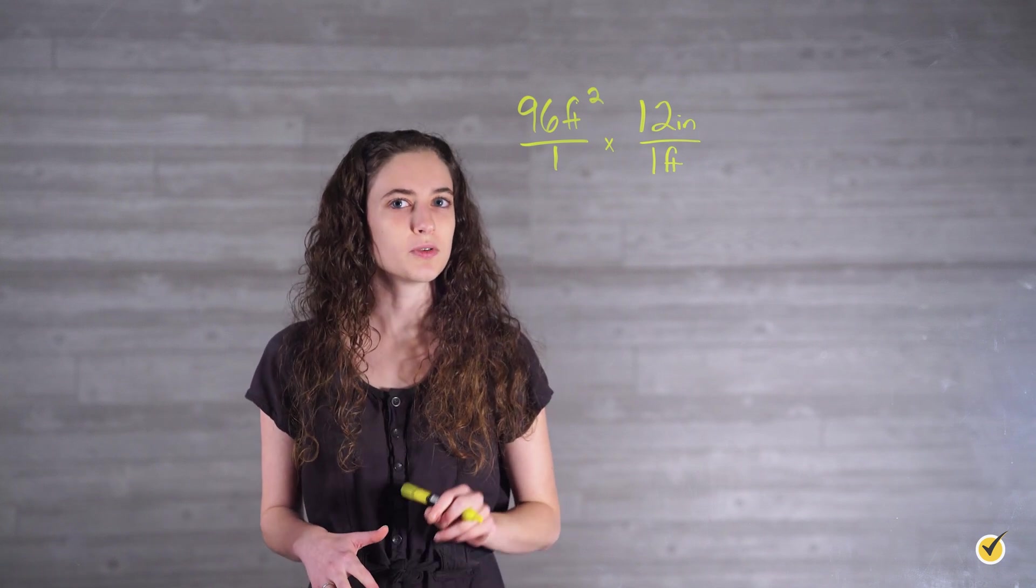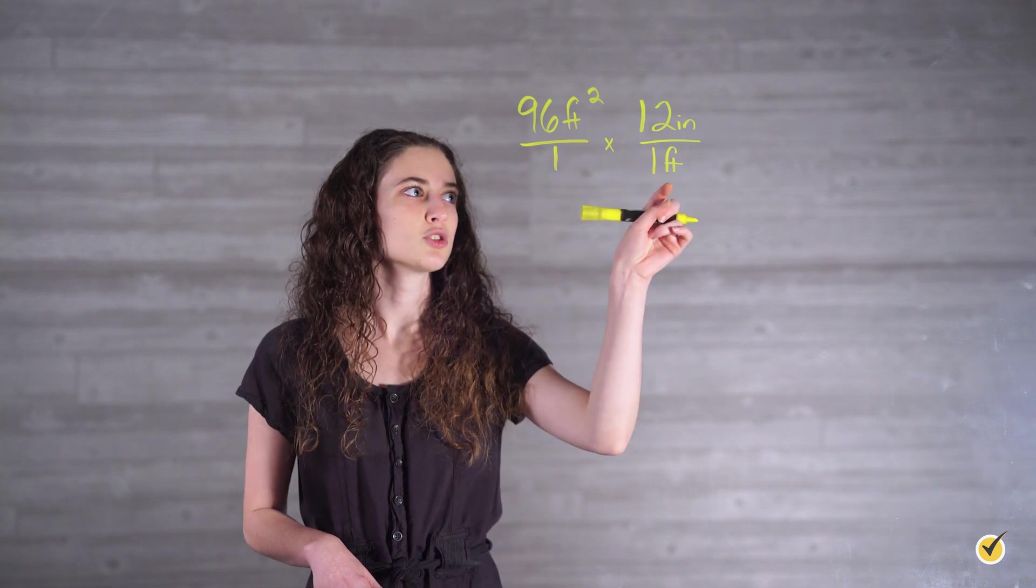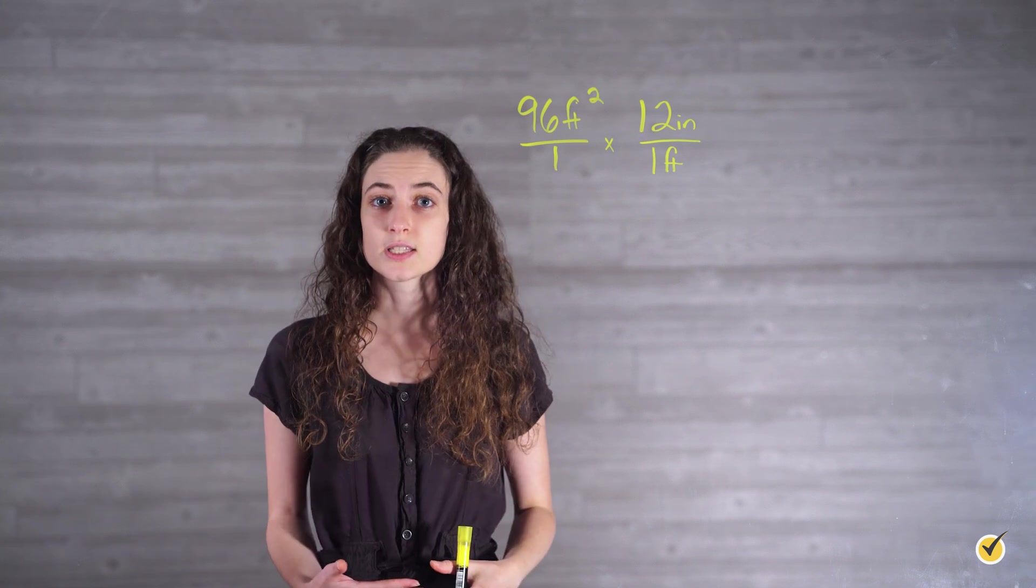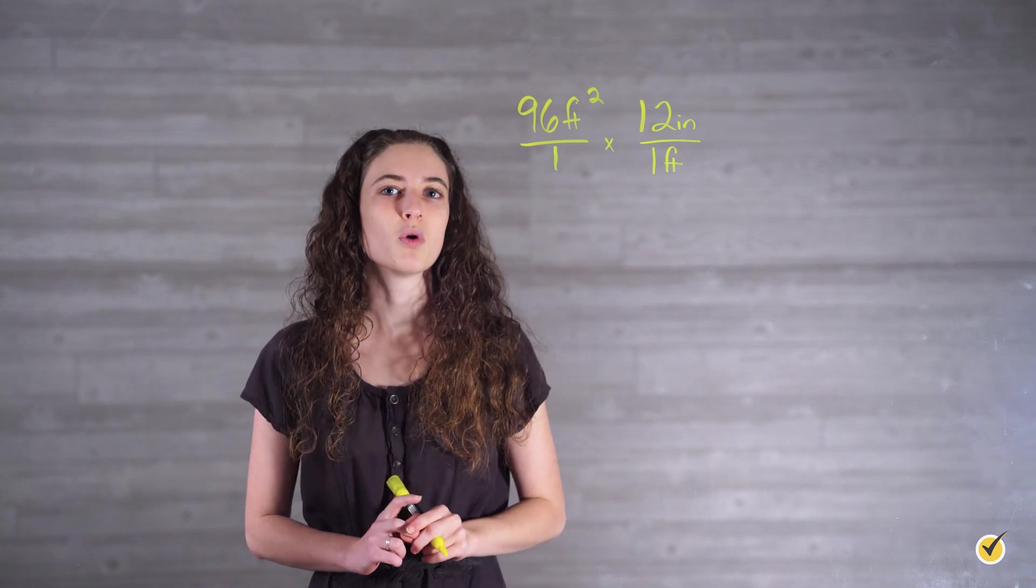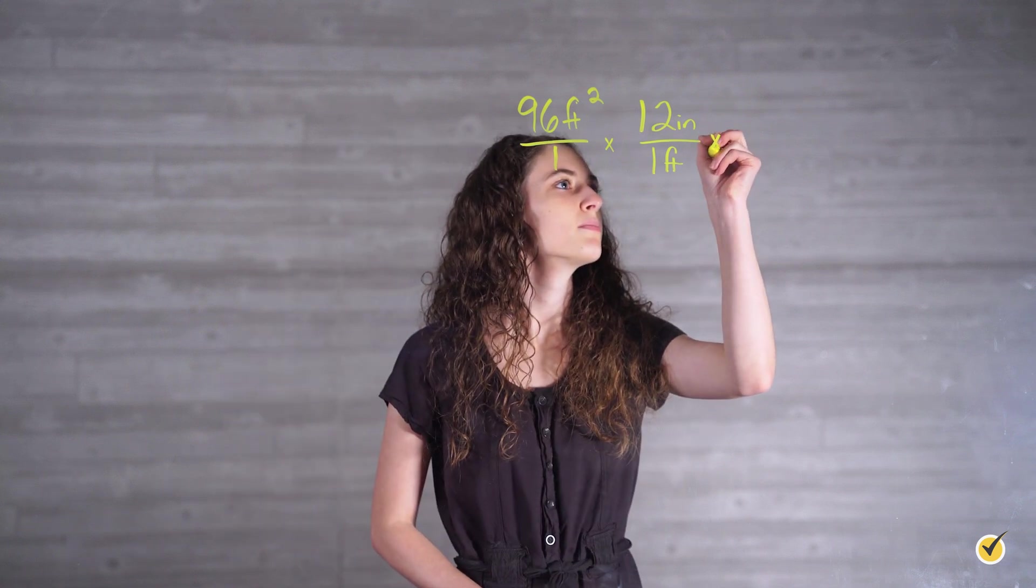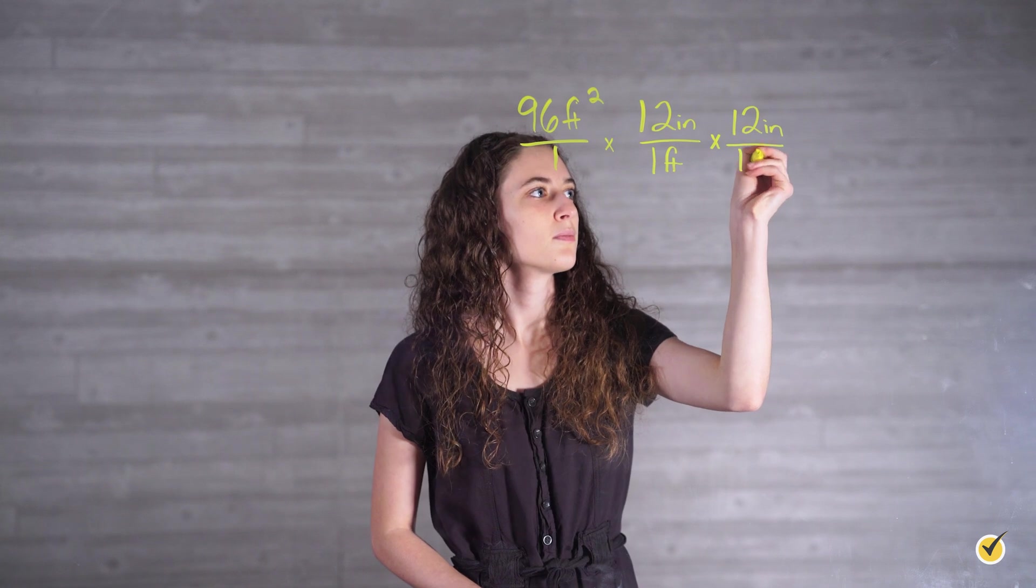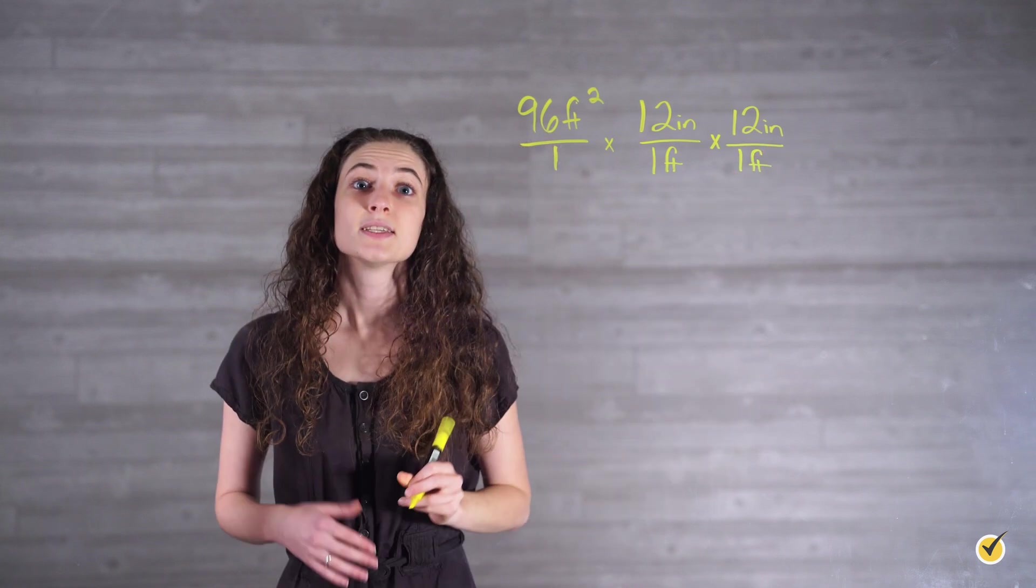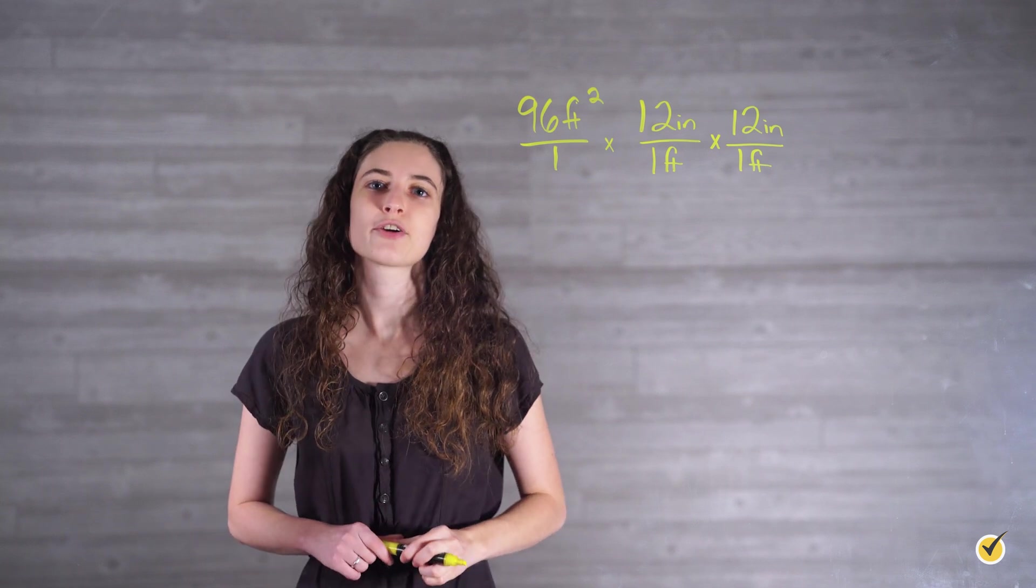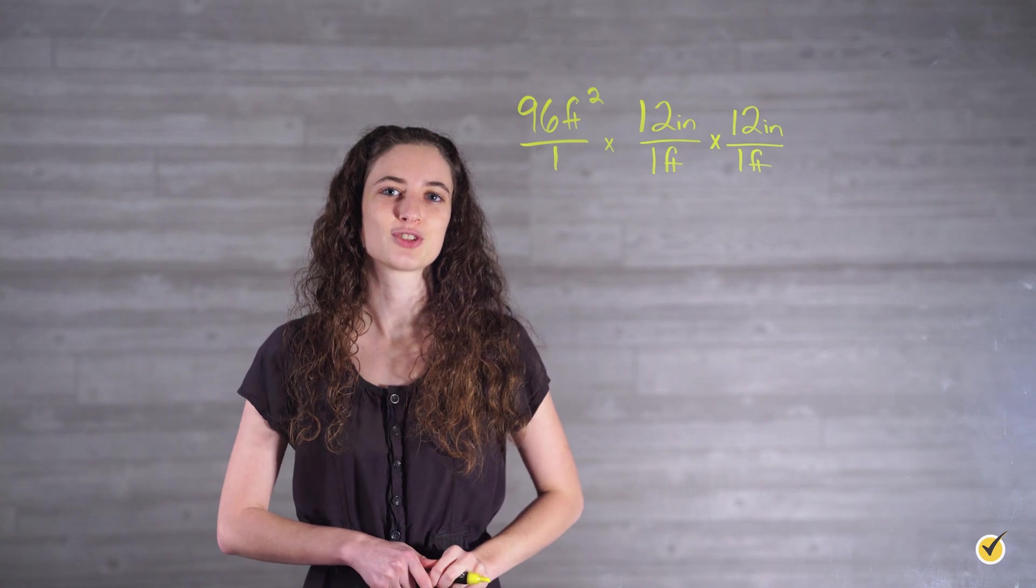Well, if you multiply the units out, you can see that we'll be left with feet times inches, because one of our feet will cancel out, but the other one won't. To fix this, we simply need to multiply once more by our conversion factor. Since we are working with square units, it makes sense that we would multiply by our conversion factor twice, or in other words, multiply by our conversion factor squared.